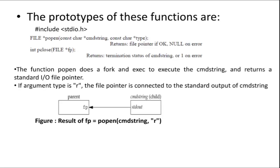These are the prototypes. The popen function is mainly used to create a pipe. You can see the arguments are a command string — string is a character pointer — and a type argument. If popen is successful, a file pointer will be returned; otherwise NULL will be returned on error.